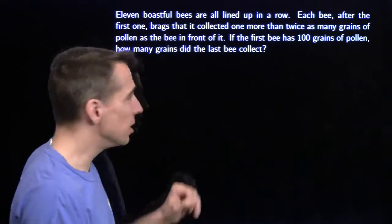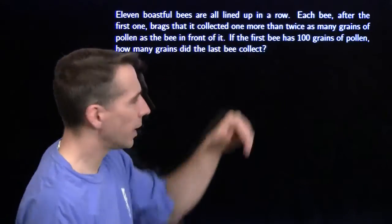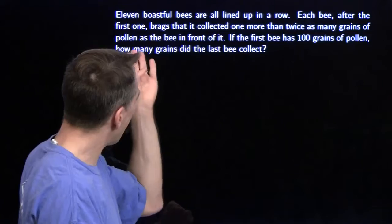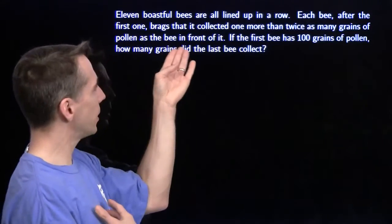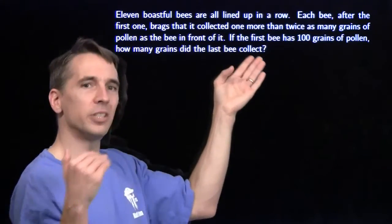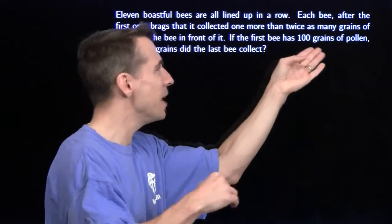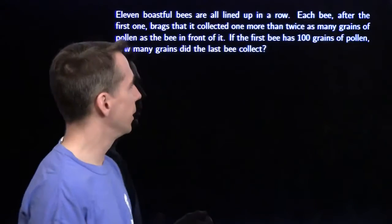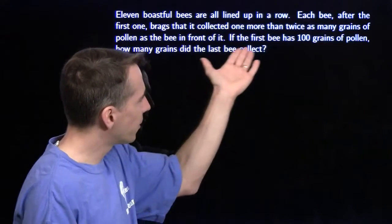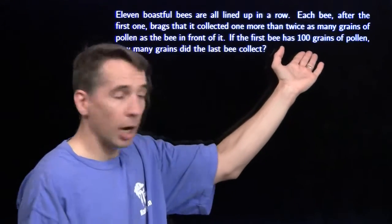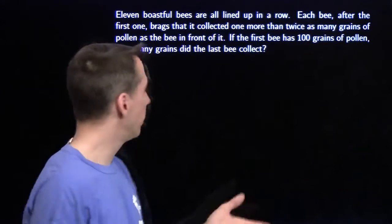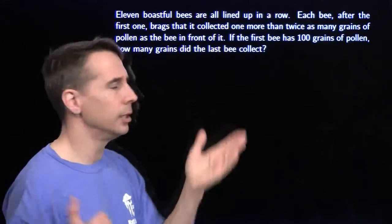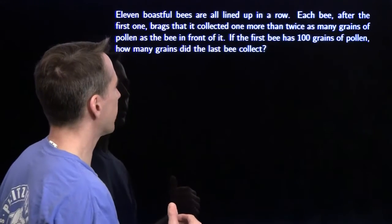We've got 11 boastful bees, all lined up in a row. Each bee after the first one brags that it collected one more than twice as many grains of pollen as the bee in front of it. If the first bee has 100 grains of pollen, how many grains did the last bee — the eleventh bee — collect?